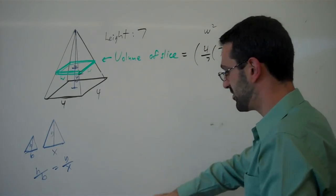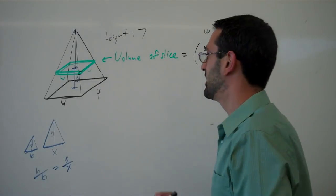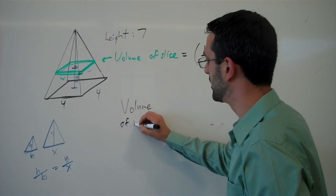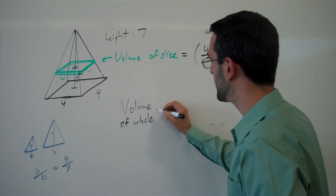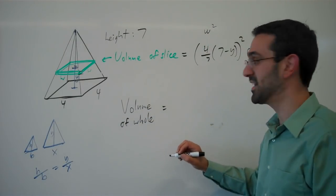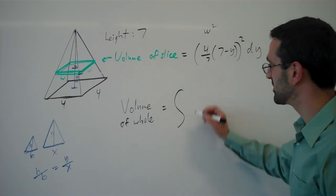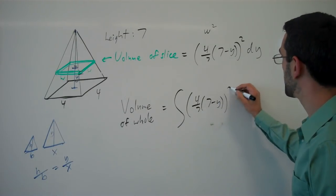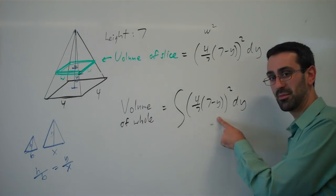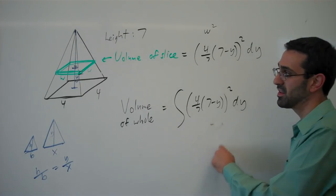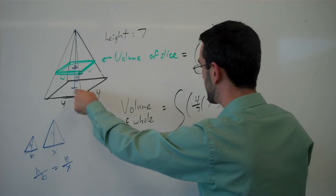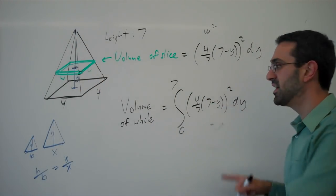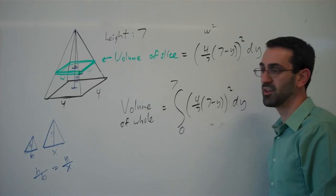So now that we have the volume of one slice, we can find the volume of the whole thing, of the whole pyramid by, you guessed it, adding up all those little slices. So we're going to add up all of those four-sevenths, seven minus y squared dy's. We're going to add up the volume of the slices using the integral for all y values from the very bottom y value of zero to the very top y value of seven. And that will give you the volume of the whole pyramid.